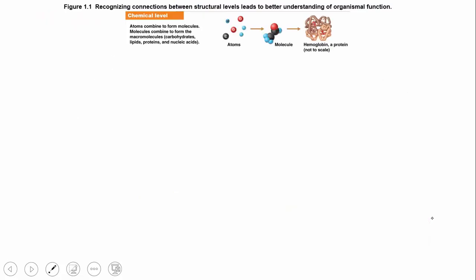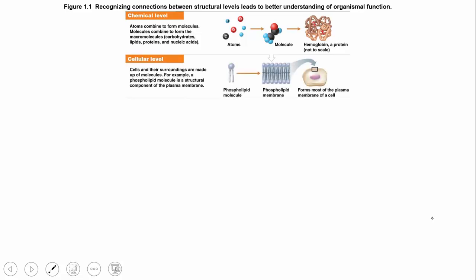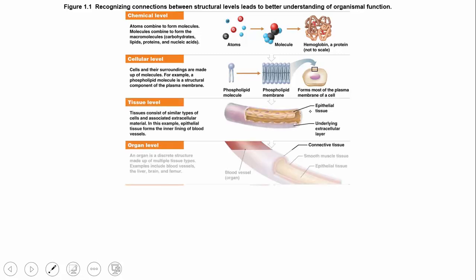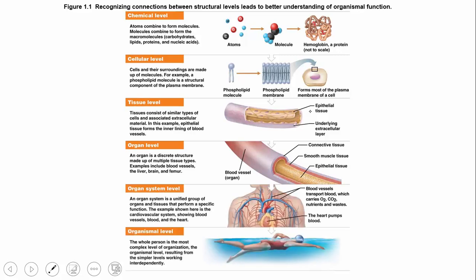When we talk about anatomy, we want to understand the different functional levels we can study it at. We start at the chemical level — the atoms and molecules used to form structures. We can move up to the cellular level; the cell is the basic unit of life, often has a phospholipid membrane forming its outer lining. We also talk about the tissue level, then the organ level, the organ system level, and finally the organismal level.